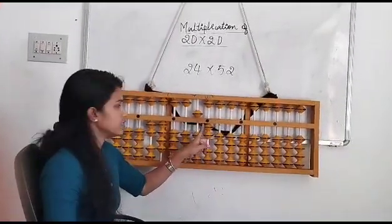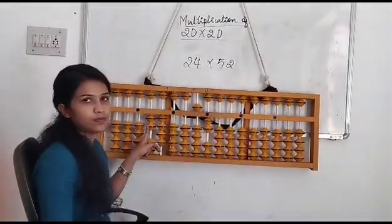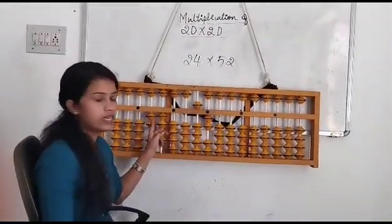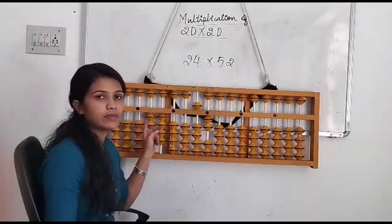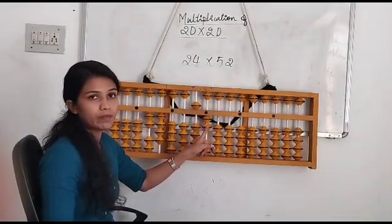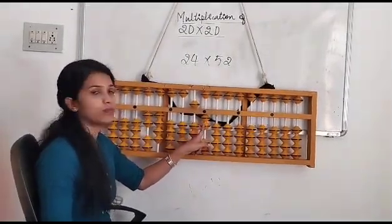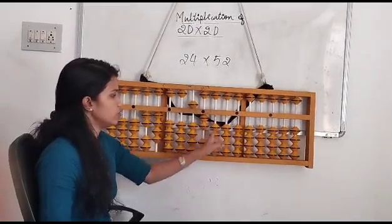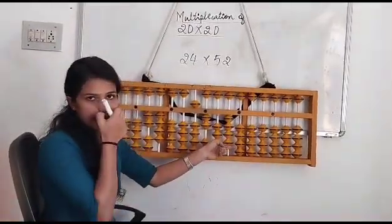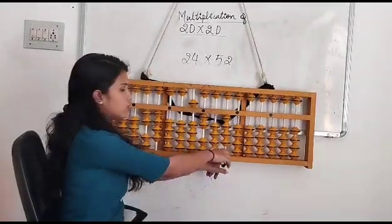First we will multiply the unit rod with the outer rod. 2 multiplied with 2 - 2 twos are 4. As 4 is a single digit number, we will make it double digit and place it as 04. Also, 4 should be placed after the question, after the 2. So after 2, place 0 and 4. Once you place the answer, place your finger to stop. I am placing my finger on 4.